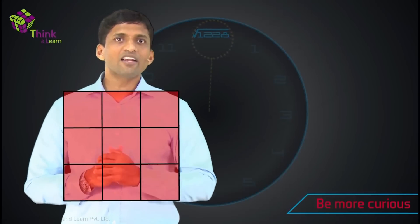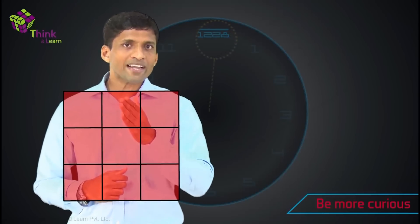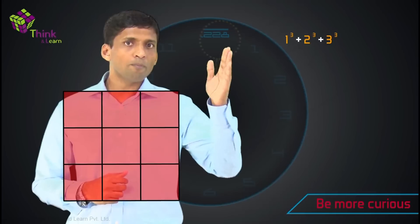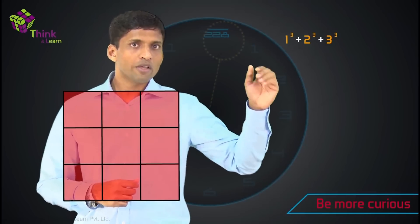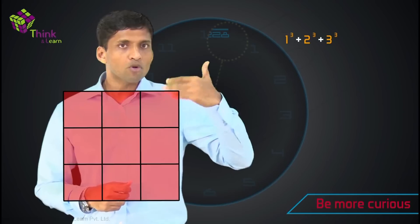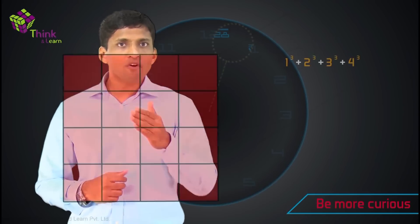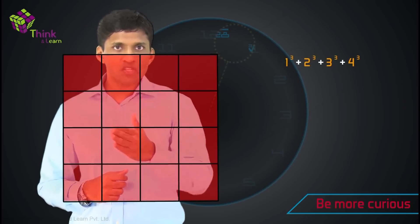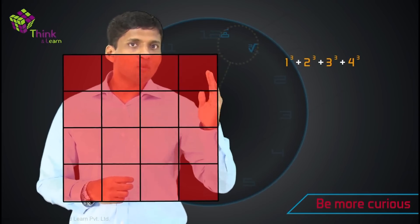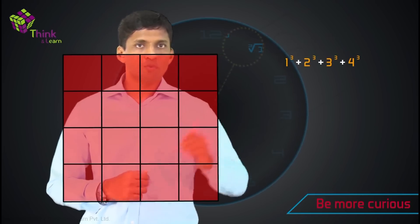If I take a 3 by 3 grid like this, the total number of rectangles here will be 1 cube plus 2 cube plus 3 cube. You should ask why — that's what we are going to answer. If I take a 4 by 4 grid like this, total number of rectangles will be 1 cube plus 2 cube plus 3 cube plus 4 cube.